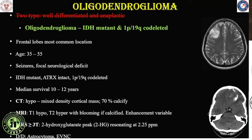On MRI, the tumour is classically T1 hypo-intense and T2 hyper-intense, with linear areas of blooming on gradient or susceptibility-weighted images owing to chicken wire calcification. Differential diagnosis would include astrocytoma, glioblastoma, or extraventricular neurocytoma.